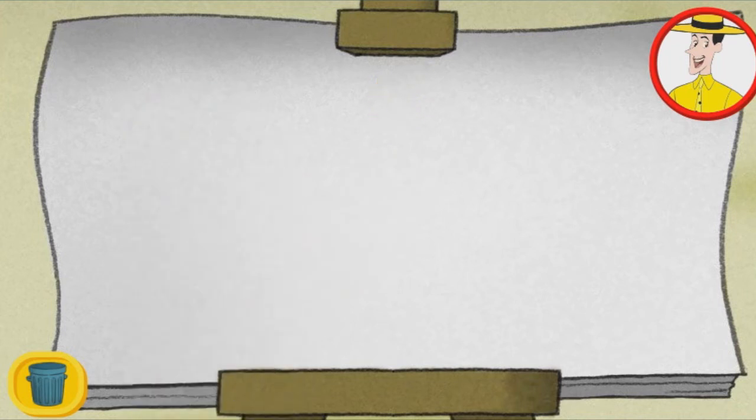Con cada impresión de la mano, Jorge añade cinco dedos. Cuenta cinco cada vez que pones la mano sobre el papel. Presiona el bote de basura para empezar nuevamente.